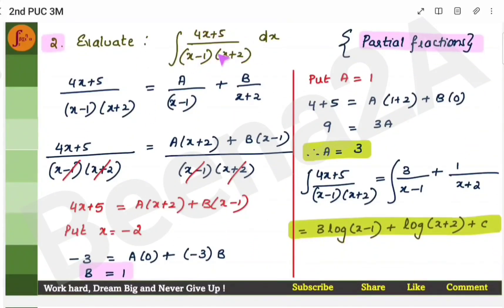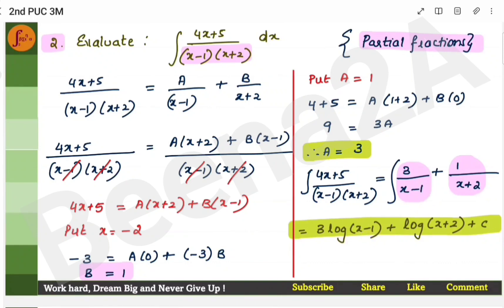For the second problem: you have two terms in the denominator as a product, so use partial fractions. Solve the partial fractions decomposition, then find each integral separately. The integral of 1/(x − 1) is log|x − 1| and of 1/(x + 2) is log|x + 2|. Always put the coefficient of x in the denominator — here the coefficient is 1, so nothing extra is needed. If it were 3x, you would put 3 in the denominator.